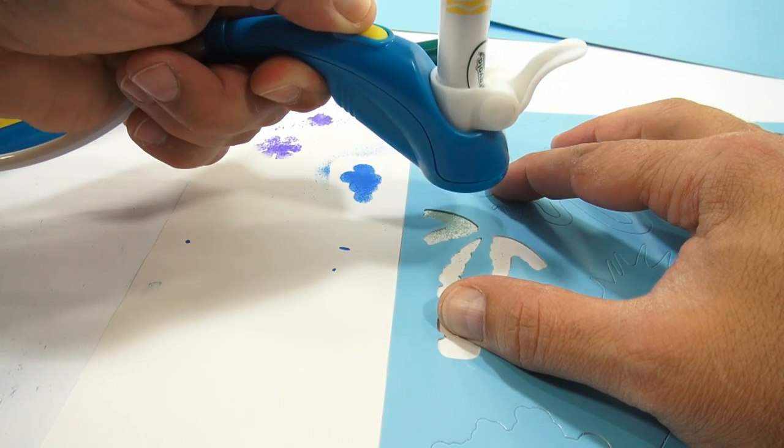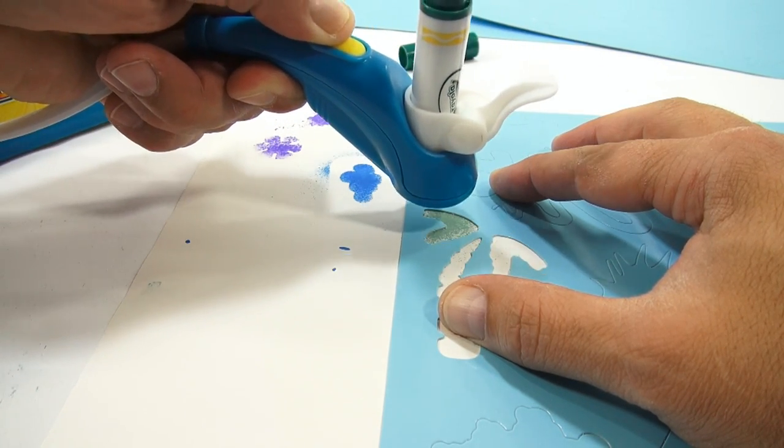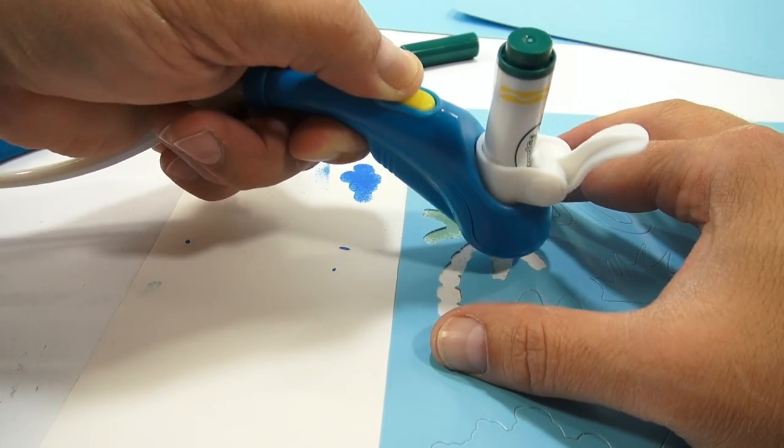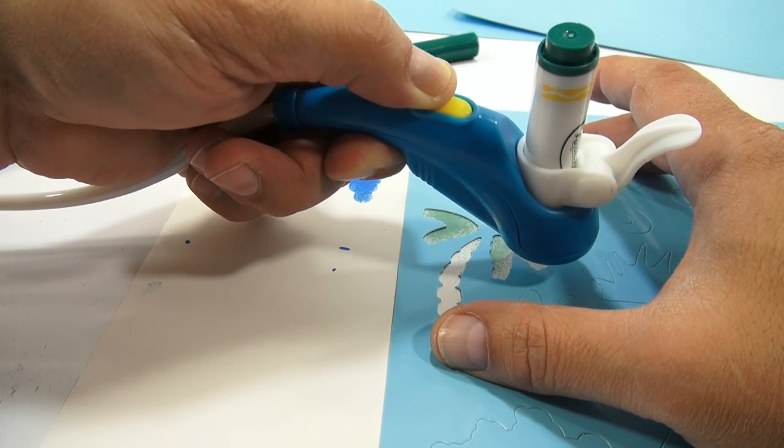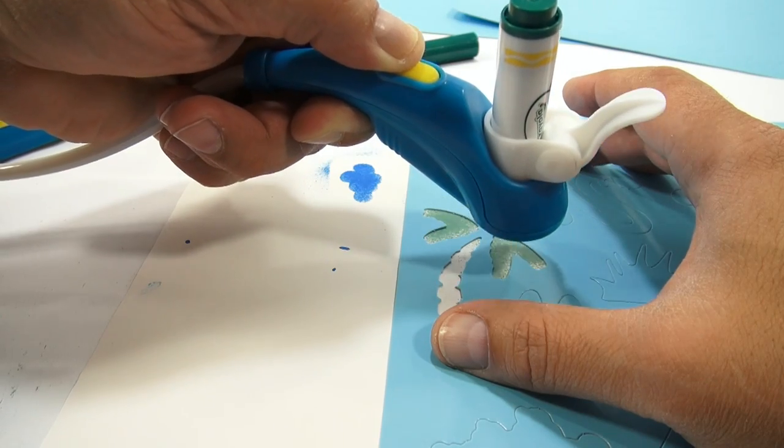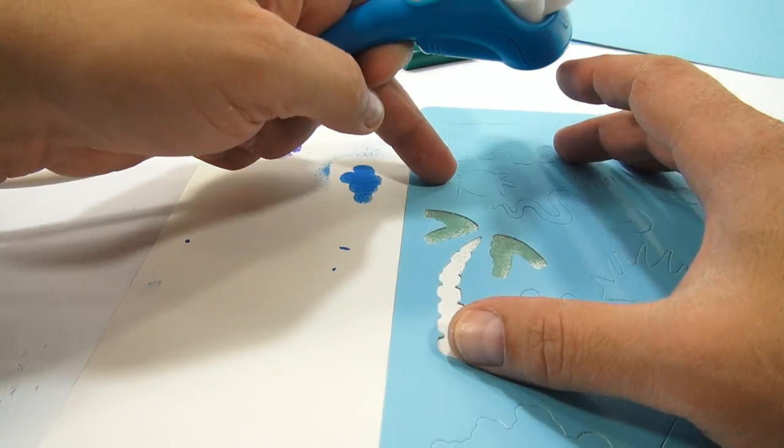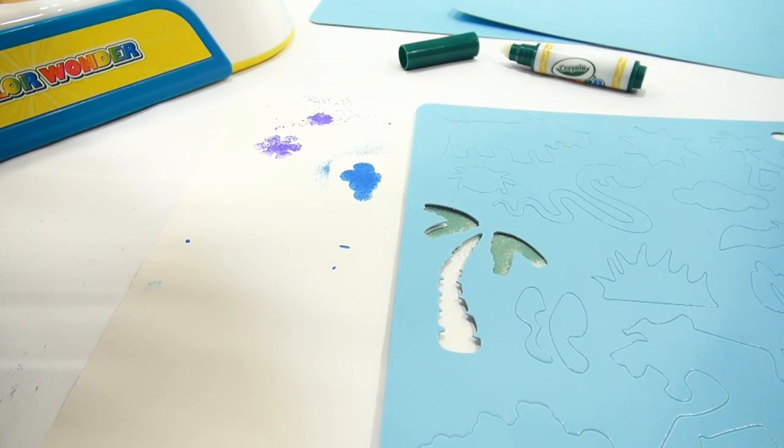There is a troubleshooting section in the instructions, if it doesn't work. Sometimes it's just the tube. And then I'm going to switch to red.